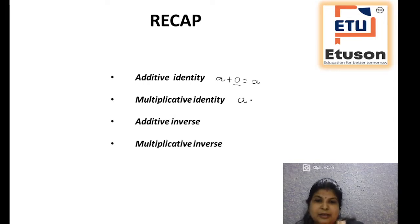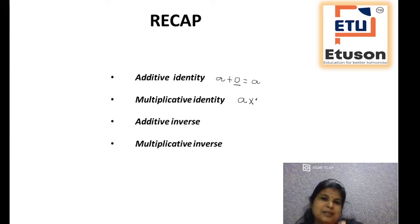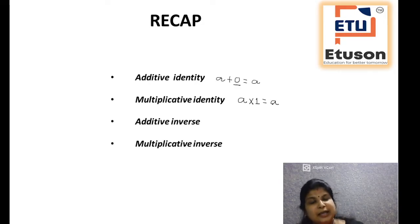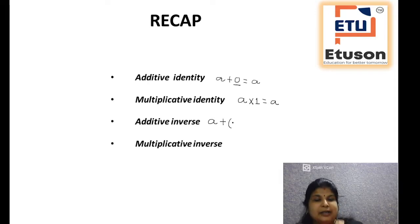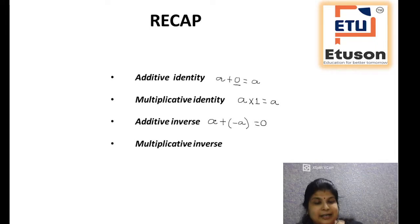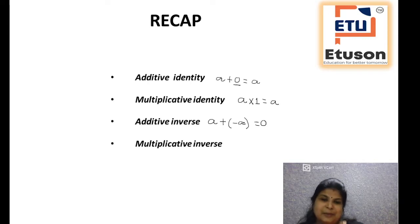What about multiplicative identity? If a number is multiplied with an integer and it gives the same result, that number was 1. Multiplicative identity is 1, because any number when multiplied by 1 gives the same number. What do you mean by additive inverse? The number when added to the number gives the value as 0. So a plus minus a is equal to 0, and minus a is the additive inverse of a. Also, a is the additive inverse of minus a.